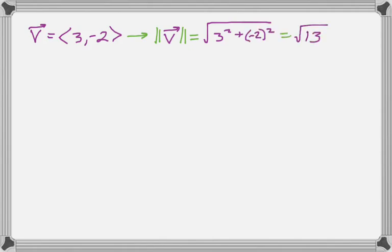Alright, so the next thing that I need is the unit vector. So I'm given the original vector, which is (3, -2), and I'm going to find the magnitude of v, which is the square root of the first thing squared plus the second thing squared. So I get radical 13 in this case.